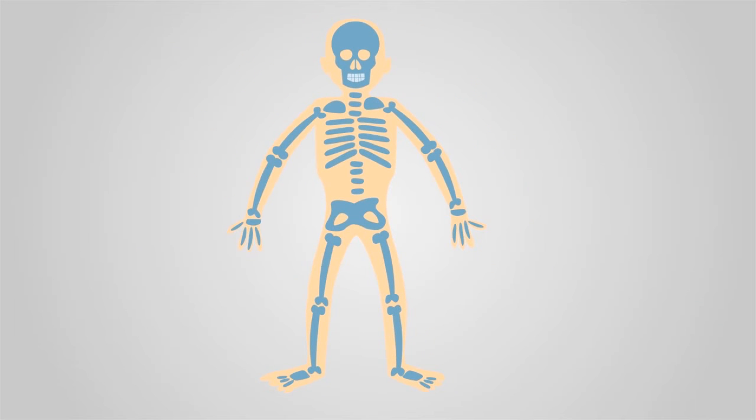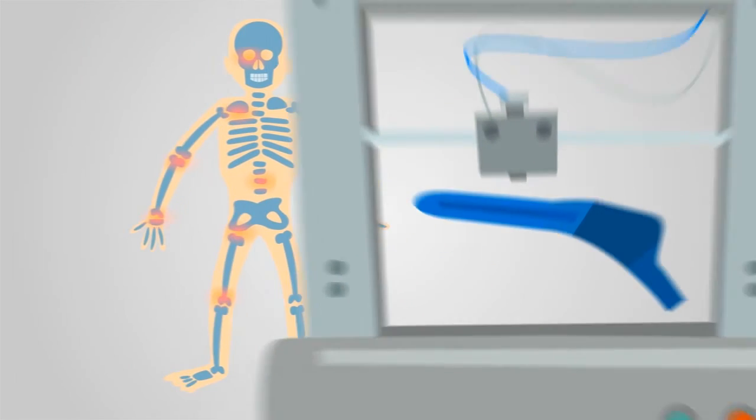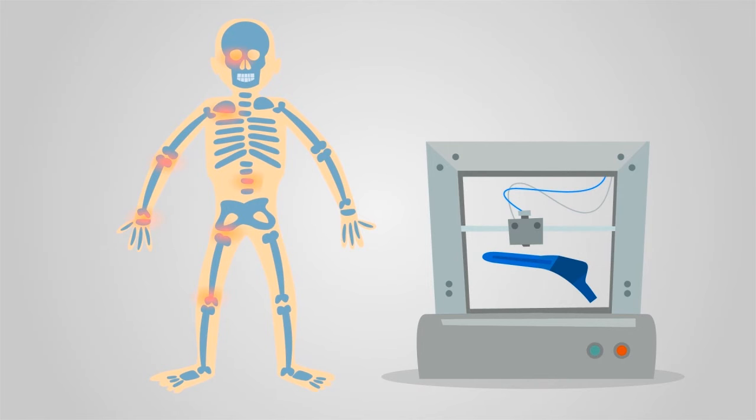As we age, we'll be able to have worn-out body parts like hip joints fixed with new 3D-printed replacements made to fit our exact personal requirements.